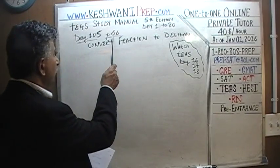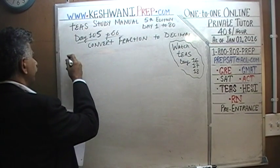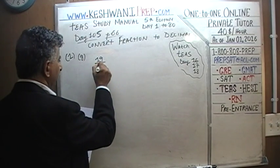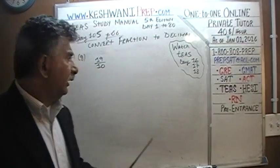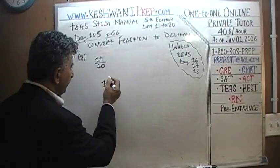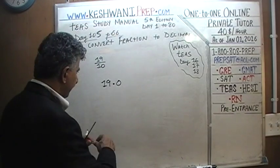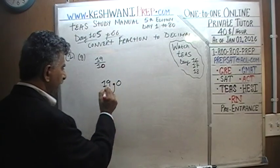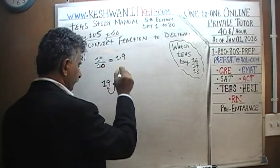We are on page 66. Problem number one, part G: we are given 19 over 10 and we have to convert this into a decimal. If we divide a number by 10, we simply move the decimal one place to the left. Since 10 has only one zero, we pick up the decimal and move it left one place — it becomes 1.9.